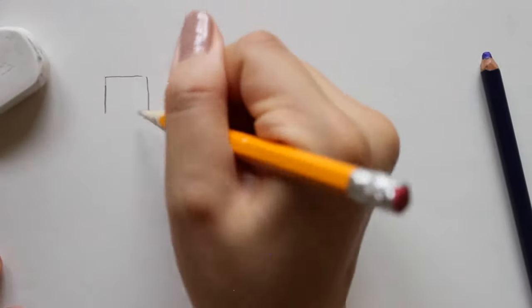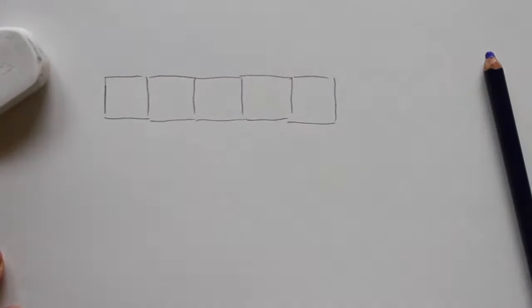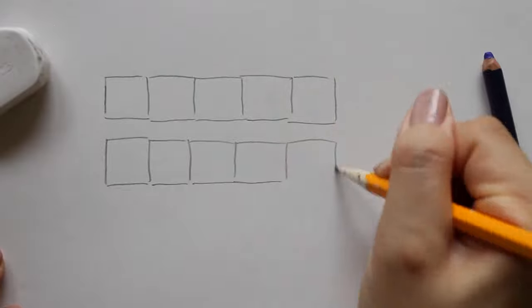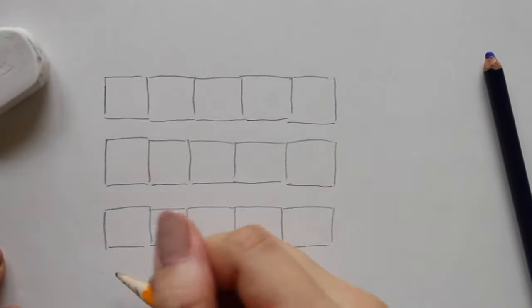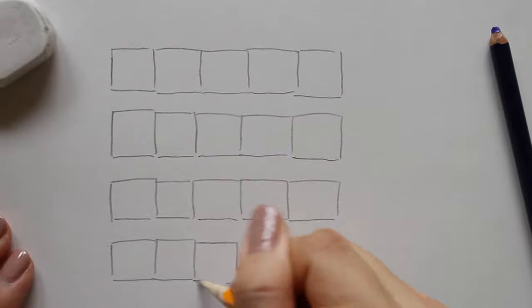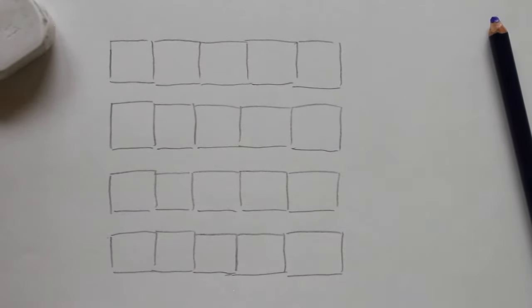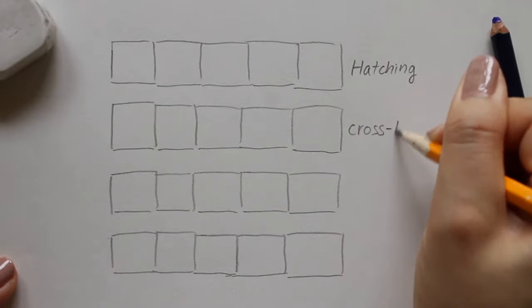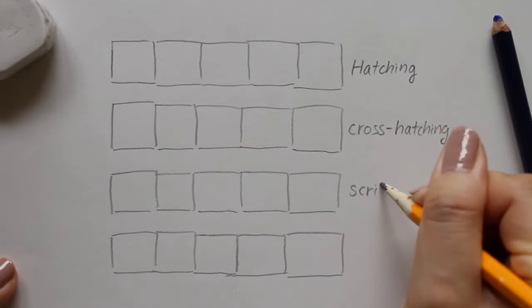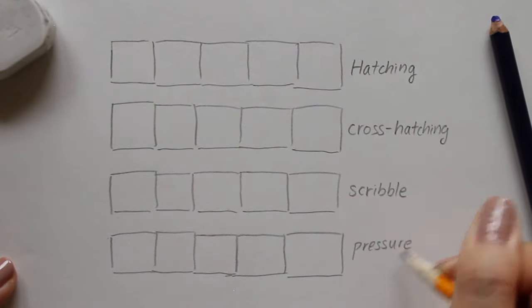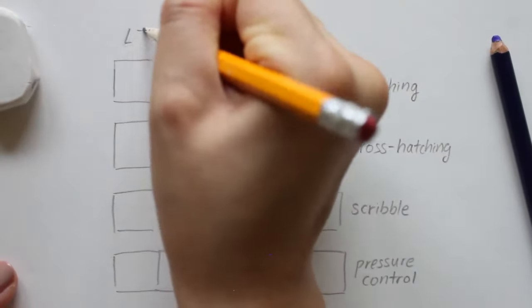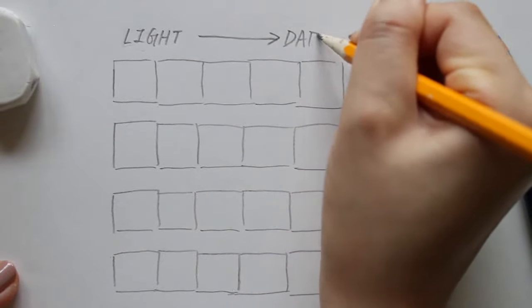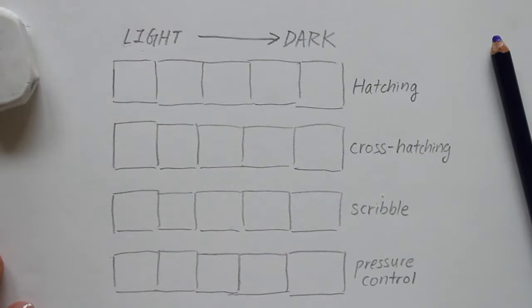First, draw four rows of five boxes. These boxes don't have to be perfect. Go ahead and label each with the techniques we're going to learn: hatching, cross-hatching, scribble, and pressure control. We will be shading these boxes from light to dark, starting from the left side.